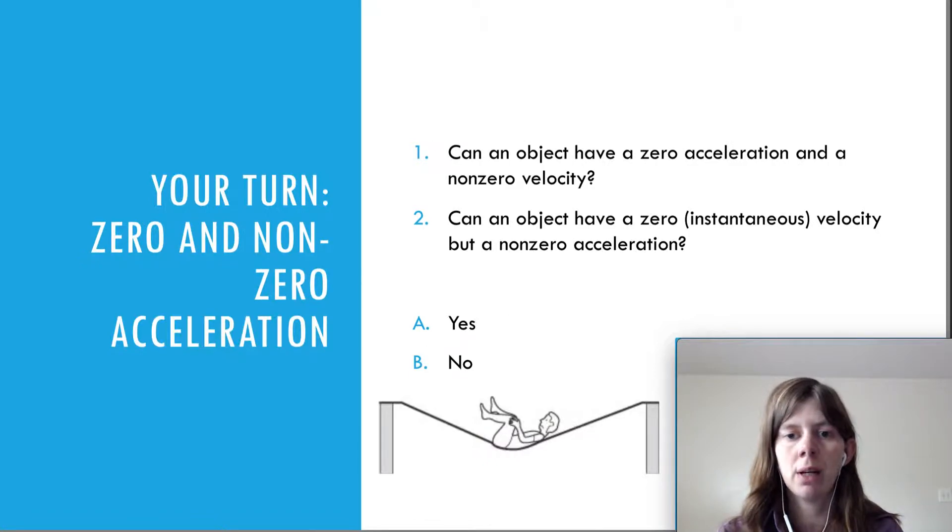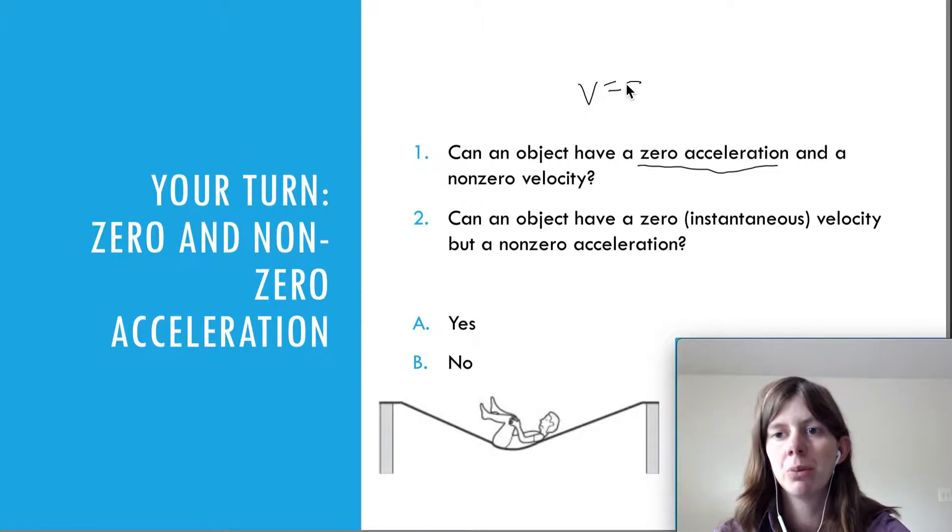The last your turn question here actually has two parts. The first part says, can an object have a zero acceleration and a non-zero velocity? So, let's think about this. Zero acceleration, that means you're not speeding up or slowing down or changing directions. A zero, non-zero velocity. Well, let's say you have a velocity of 5 meters per second to the right. That just means you're traveling to the right at a constant velocity. There's no acceleration. That is perfectly okay. You can definitely do that.